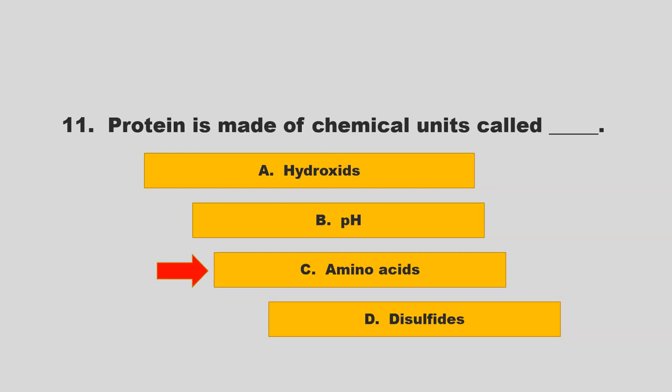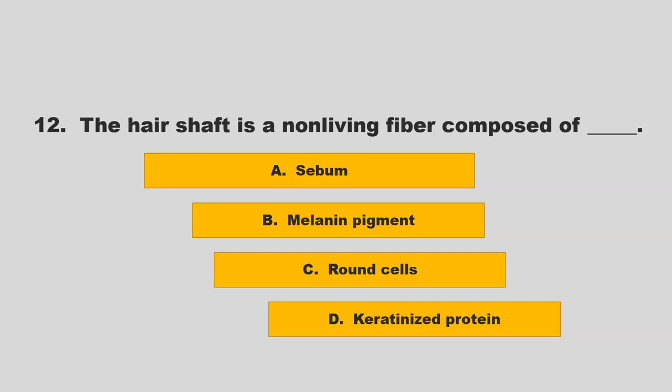The hair shaft is a non-living fiber composed of blank. Is it sebum, melanin pigment, round cells, or keratinized protein? If you chose D, keratinized protein, you are correct.